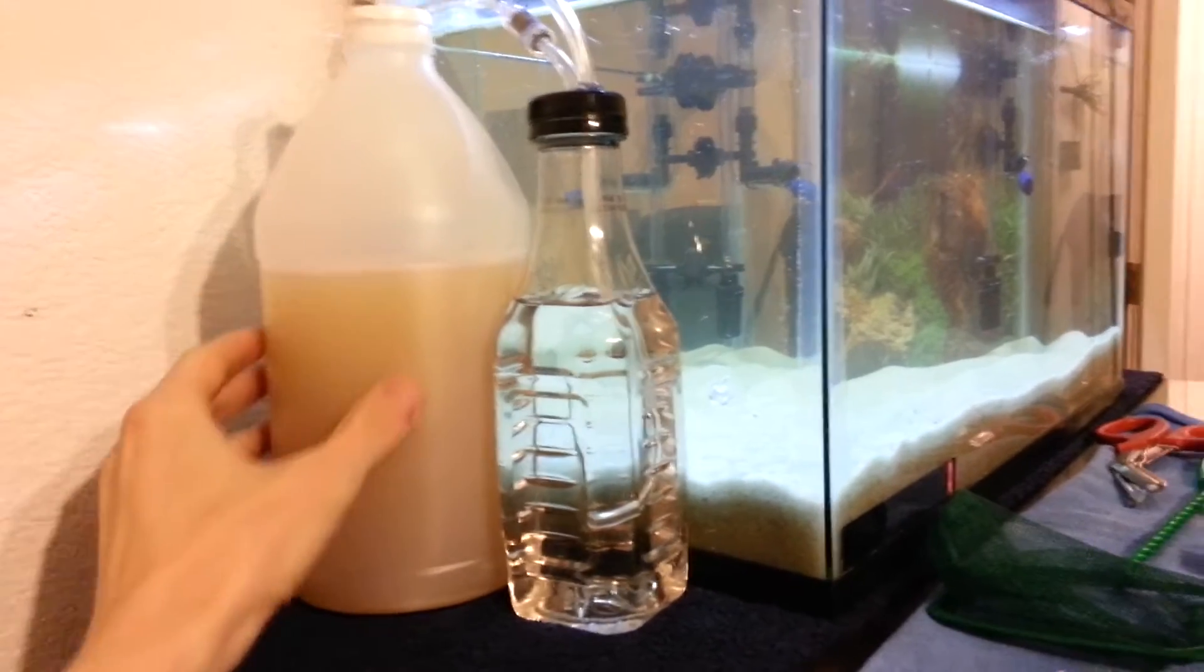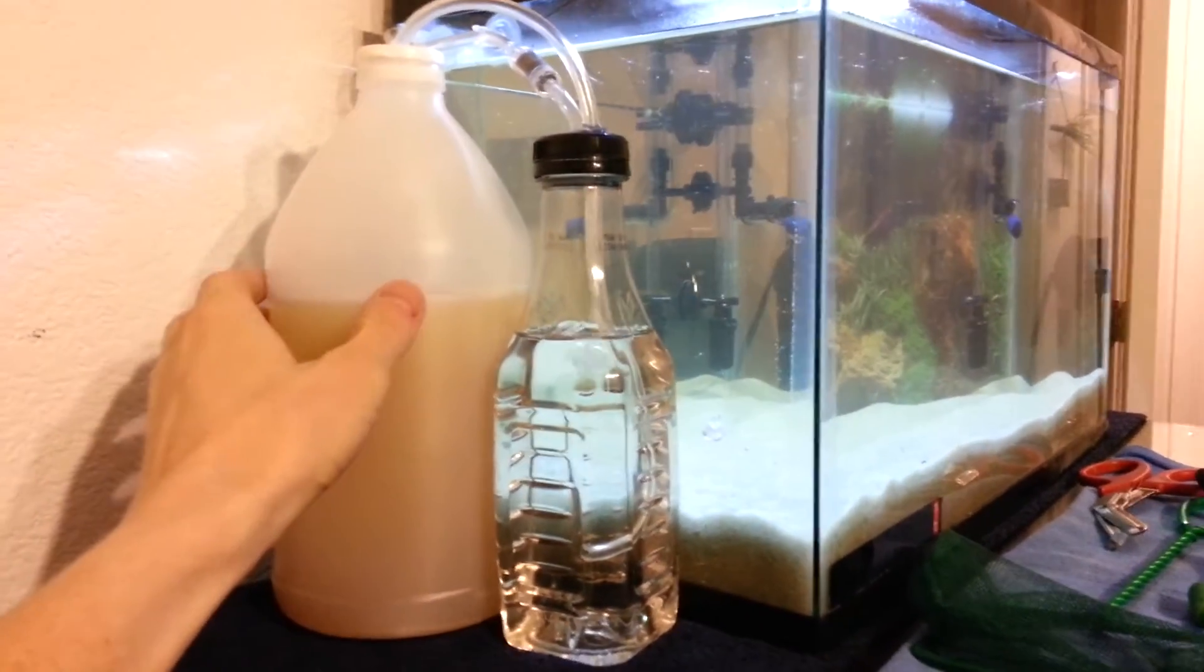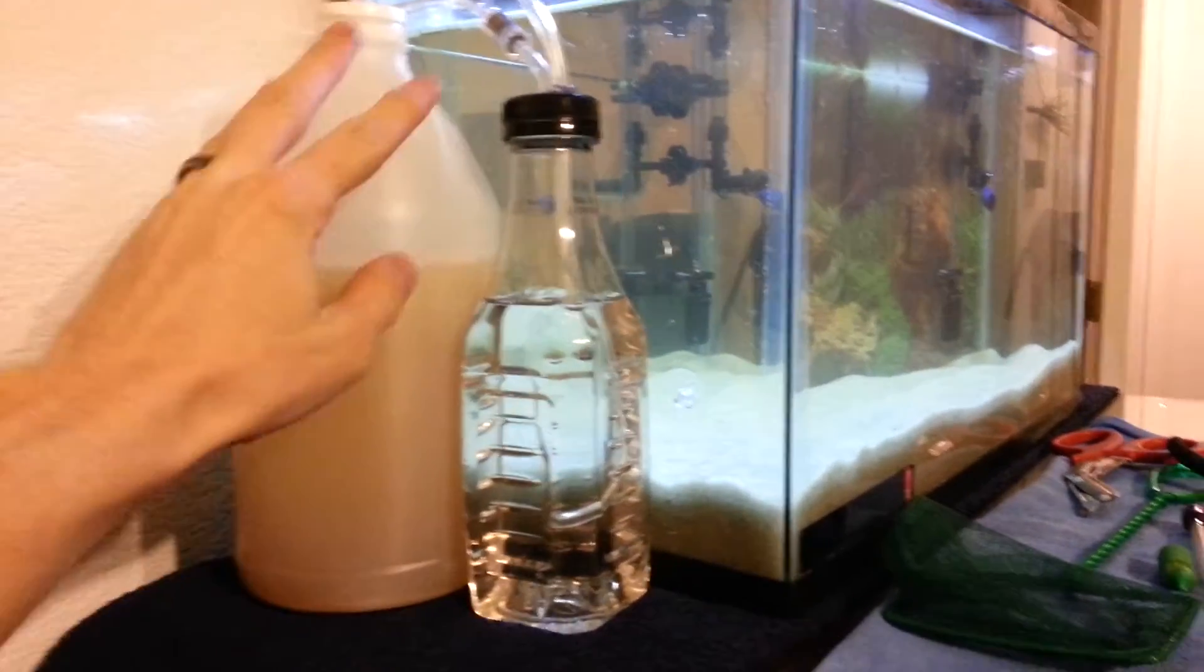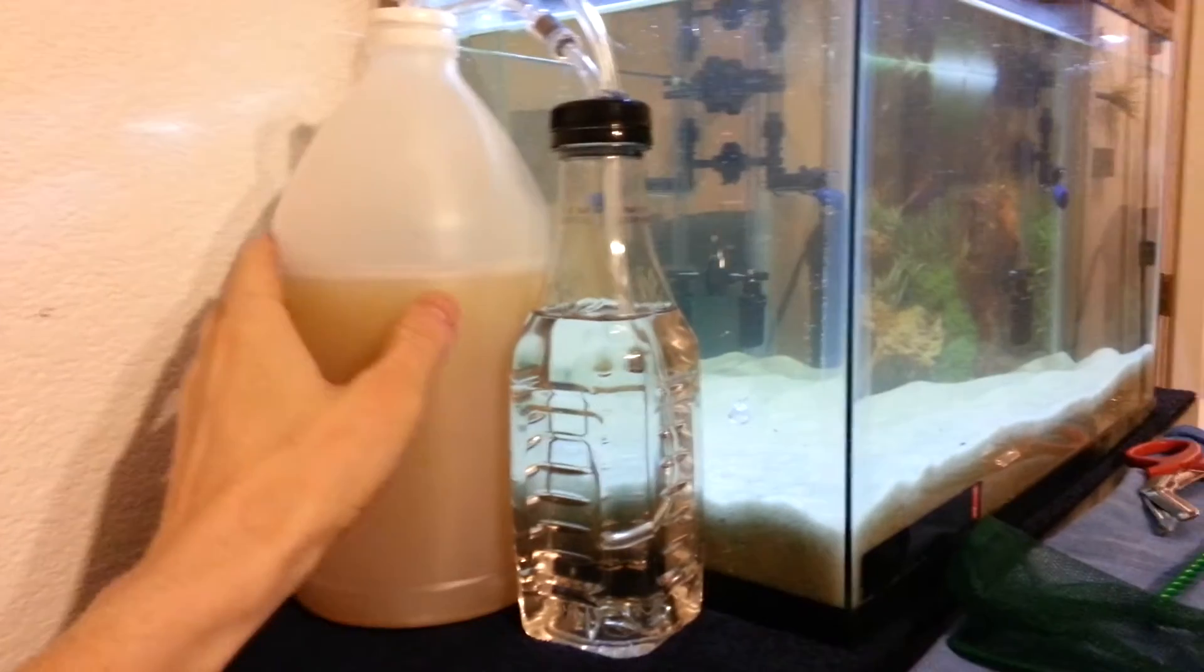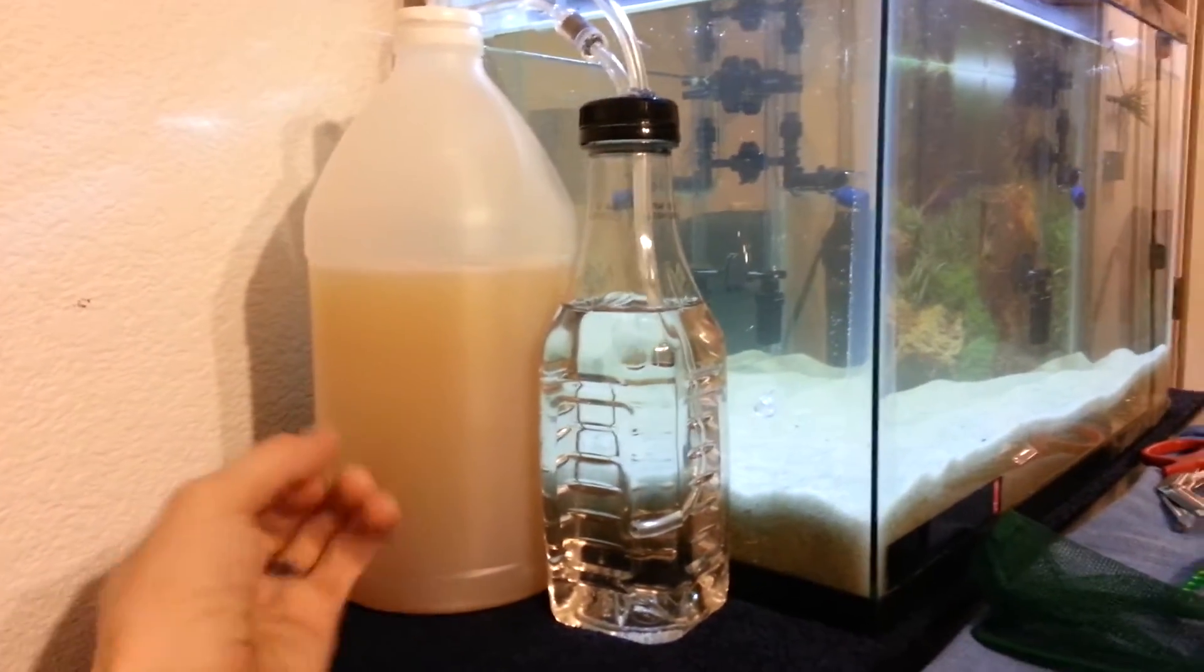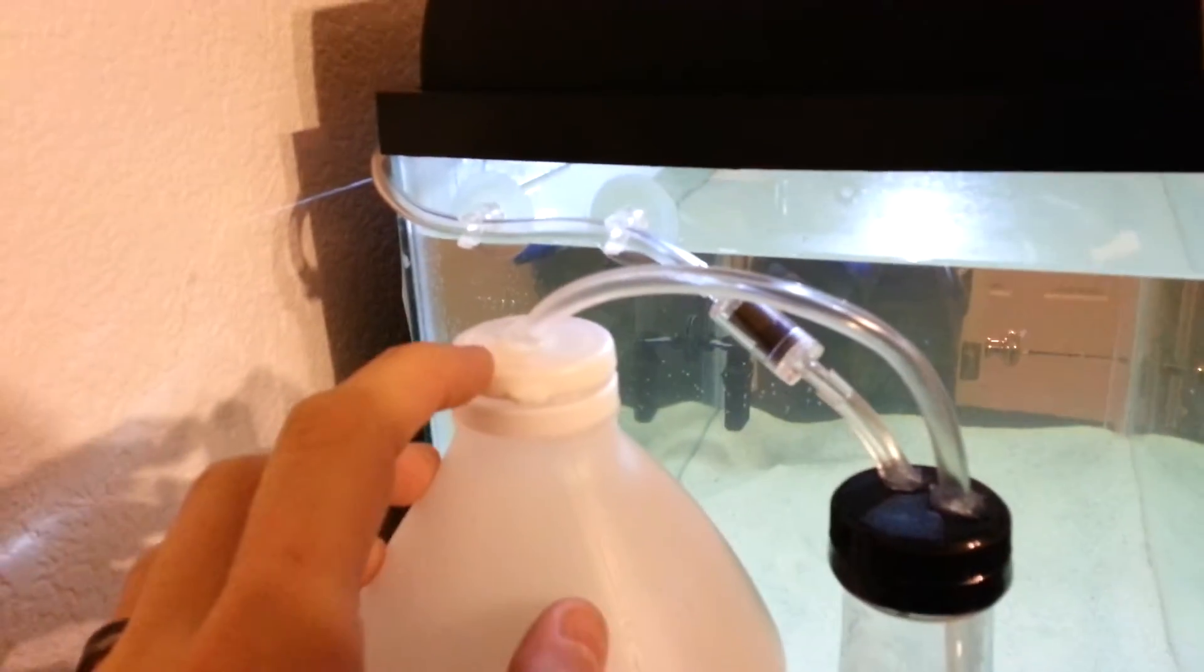So that yeast is now alive and active and eating the sugars. There's one and a half cups of sugar in here, so this should last me about seven weeks on this one tank for CO2. When those yeast eat that sugar, they release CO2, and the top of this lid is an airtight seal.